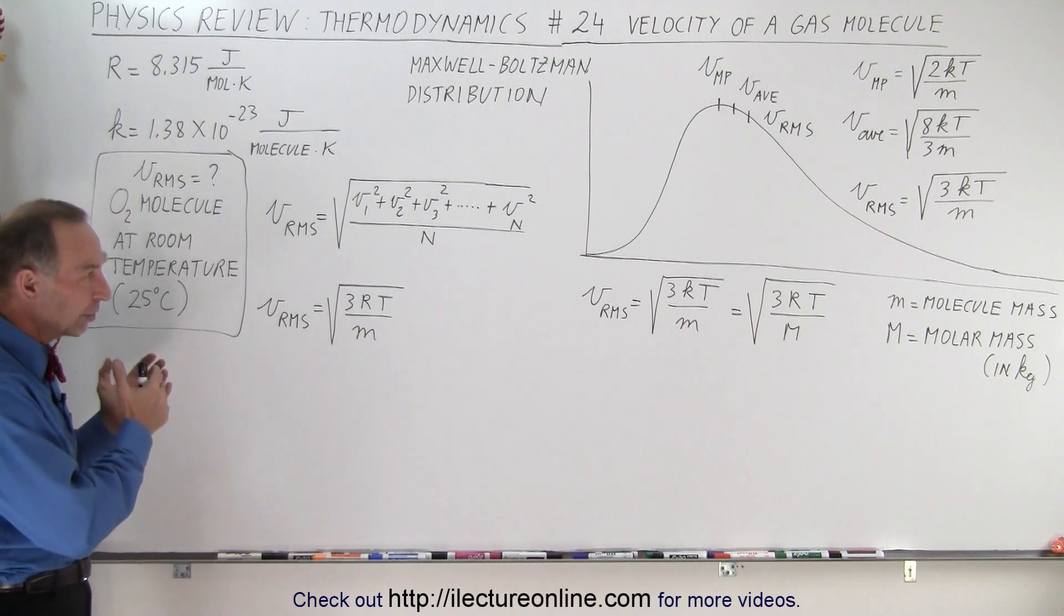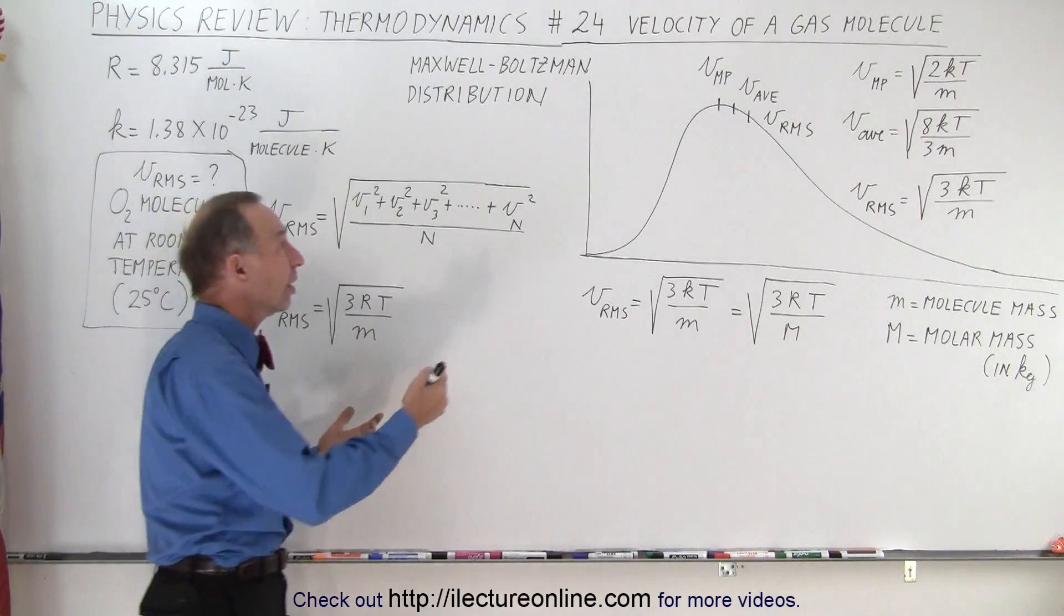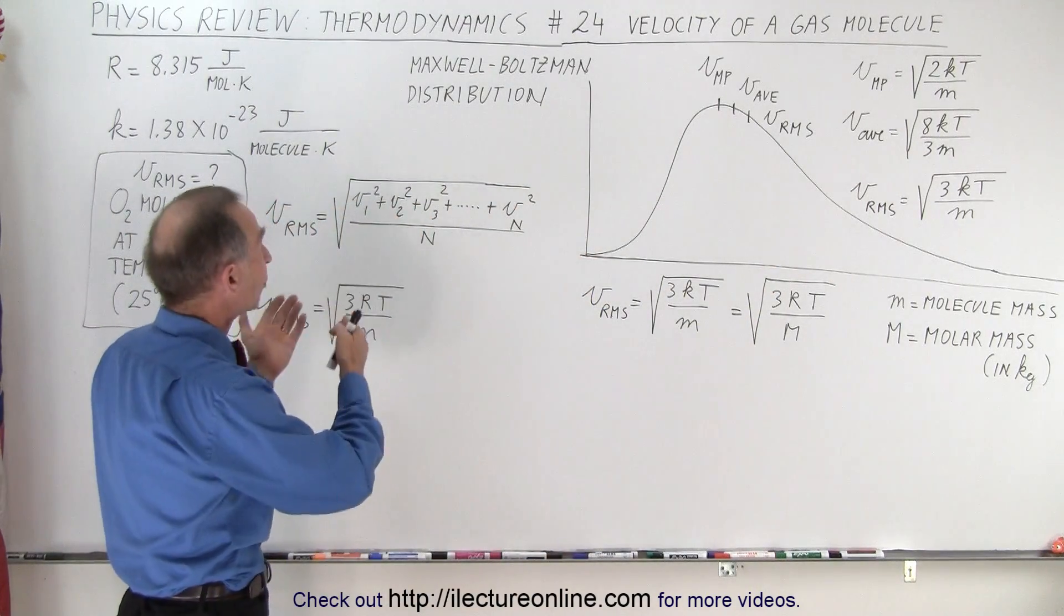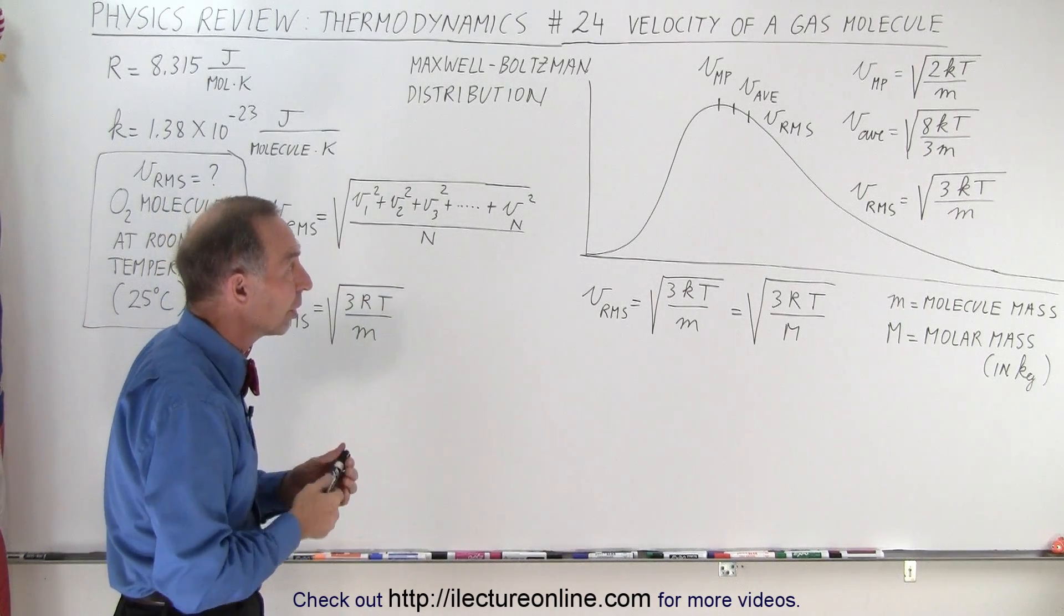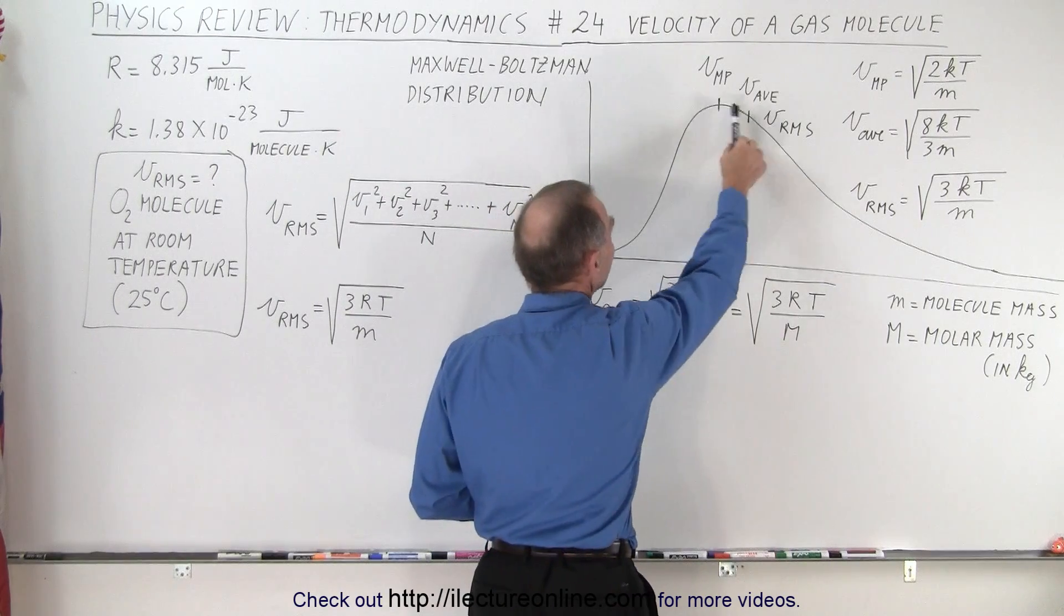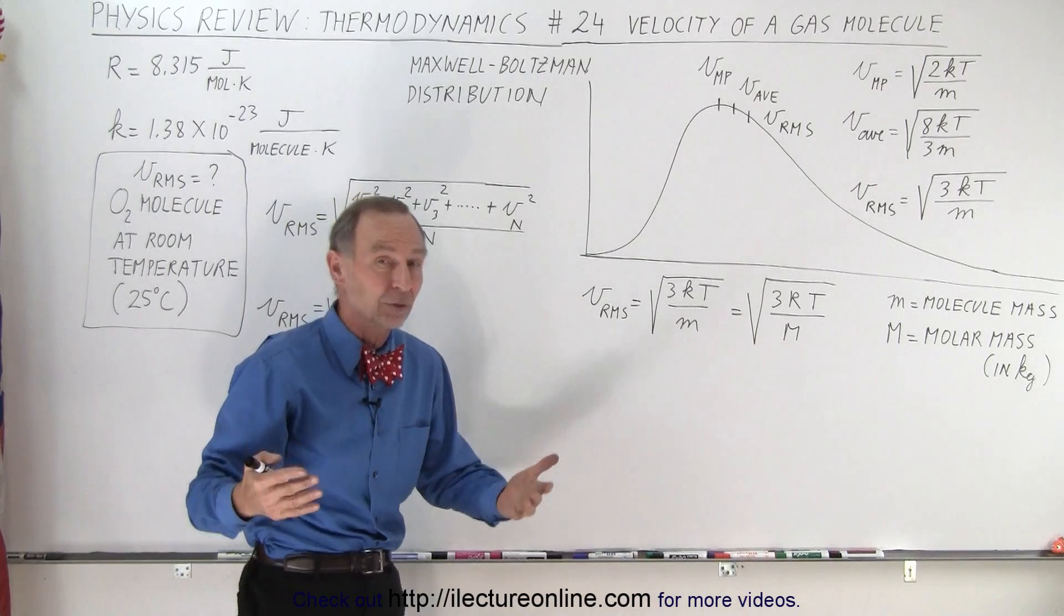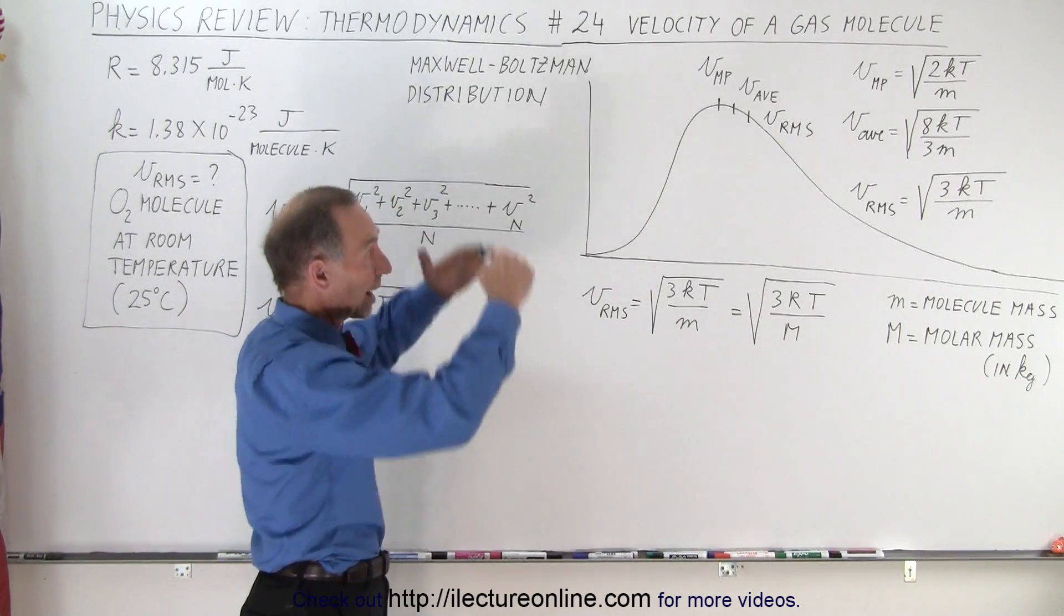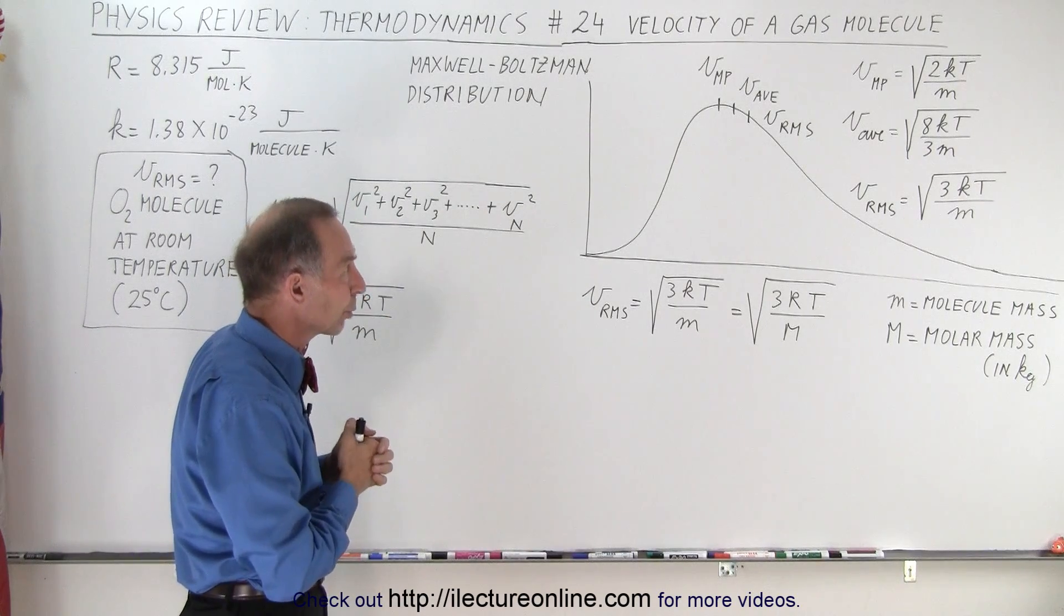But before we solve that problem, let's take a look and see what a velocity distribution curve looks like. This is called the Maxwell-Boltzmann distribution graph, or distribution function, which indicates how many molecules travel at a particular speed in a gas. That curve will look the same regardless of the gas, regardless of the temperature. It might look a little bit more to the left, to the right, higher, lower, that kind of thing, but the shape will be pretty well the same.